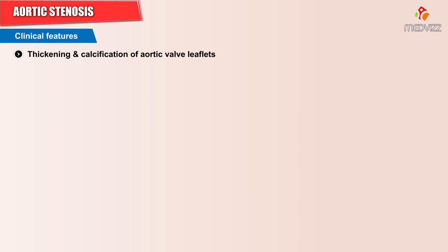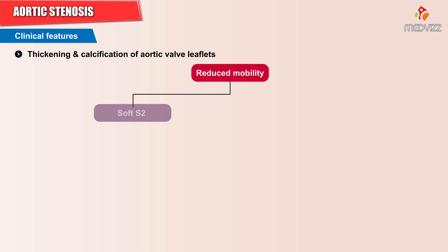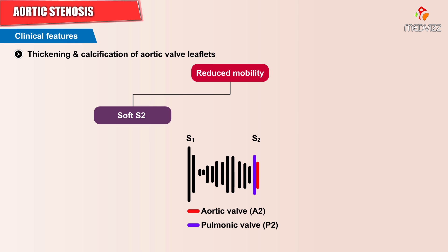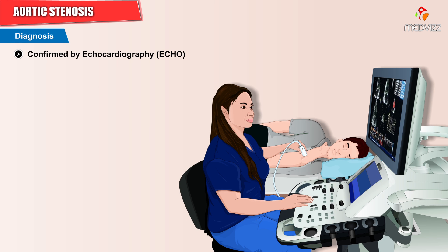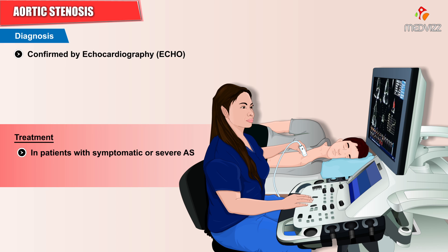Thickening and calcification of the aortic valve leaflets leads to reduced mobility and causes a soft S1. Since there is reduced mobility due to thickening, A2 is delayed and occurs simultaneously with the pulmonic valve closure, leading to a single S2. Diagnosis is usually confirmed with echocardiography, as with any other valvular heart disease, and patients with symptomatic severe aortic stenosis should be referred for aortic valve replacement.